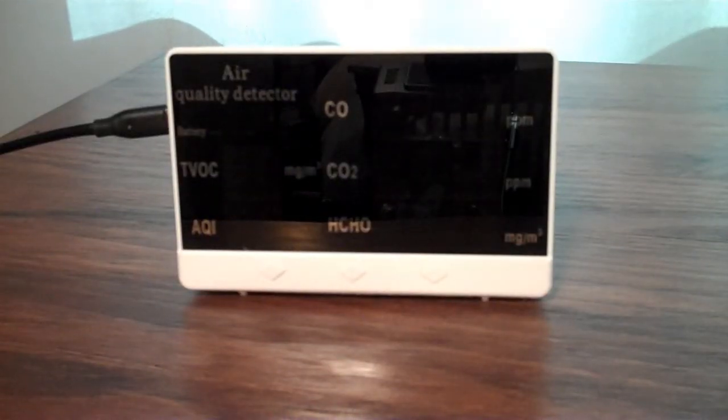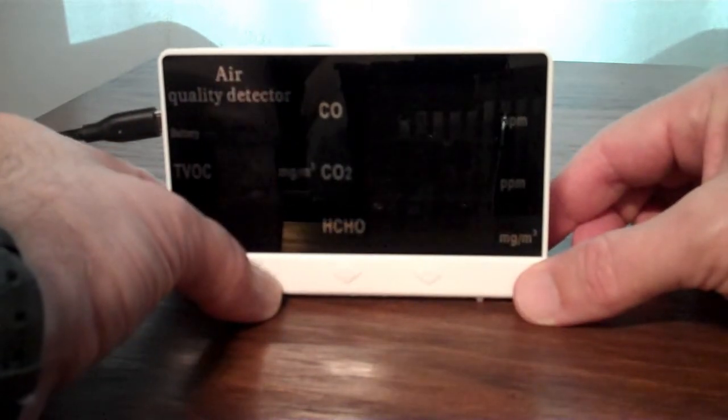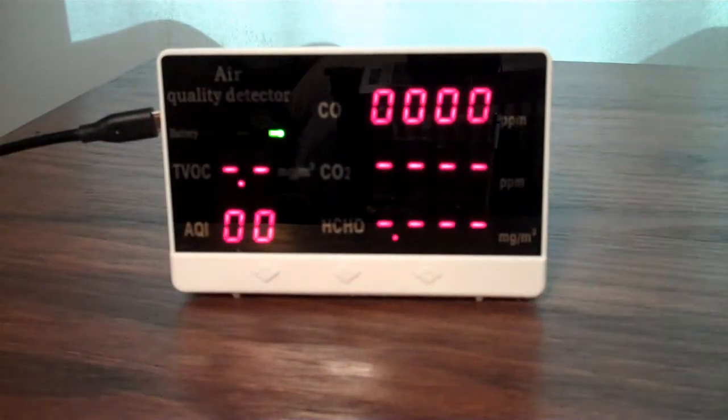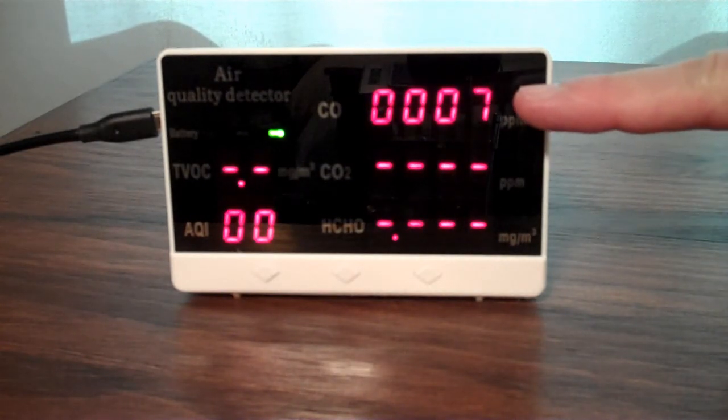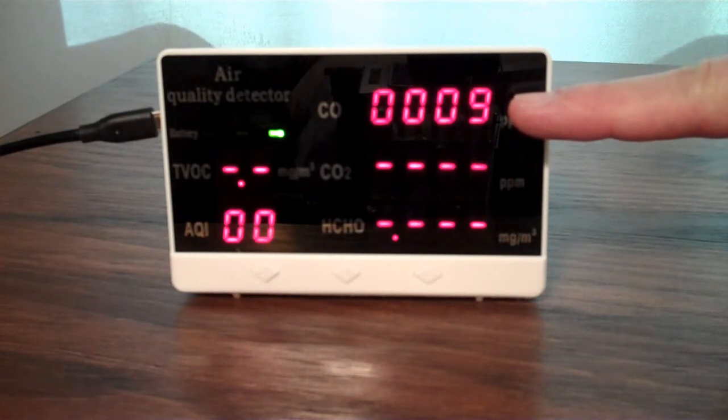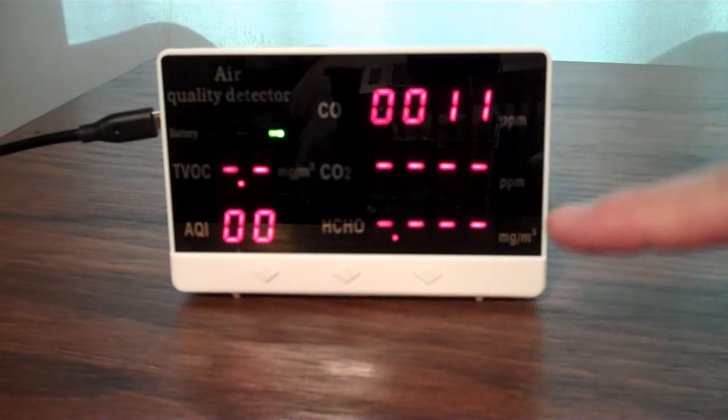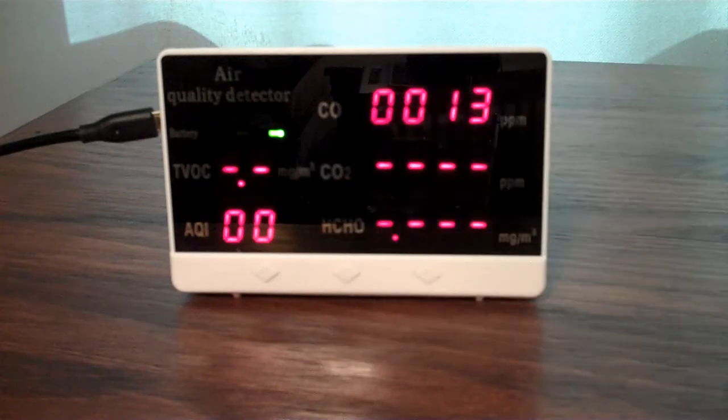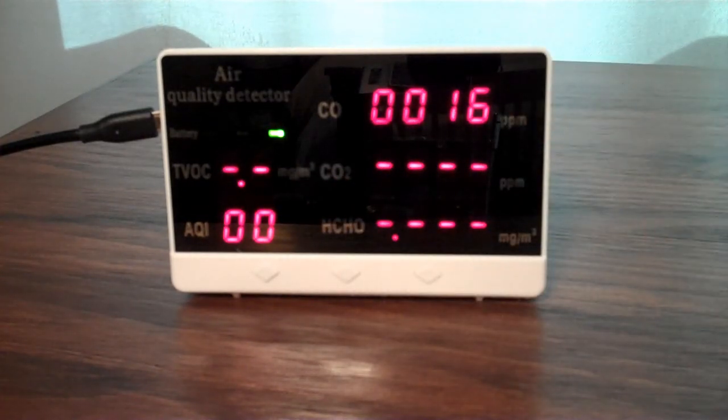One other thing to know is that when you first turn this guy on, there's a warm-up period. So it takes about two minutes for all the sensors to warm up and settle. And so while that's happening, your carbon monoxide is counting up ominously. But you know it's doing the warm-up period because there's just dashes everywhere else. And once that gets through, then it goes to a standard display.